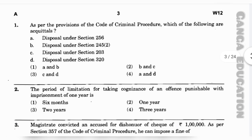Question number 1: As per the provisions of the Code of Criminal Procedure, which of the following are acquittals? (A) Disposal under Section 256, (B) disposal under Section 245(2), (C) disposal under Section 203, (D) disposal under Section 320. The correct answer is option 4 — A and D — that is, disposal under Section 256 and disposal under Section 320.